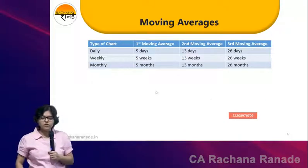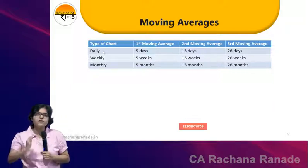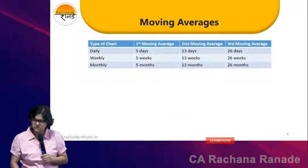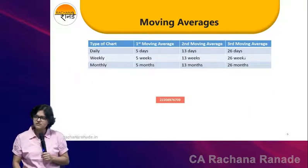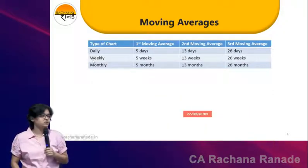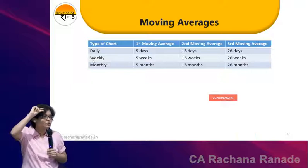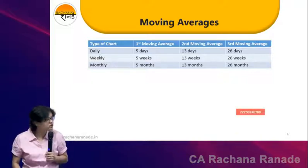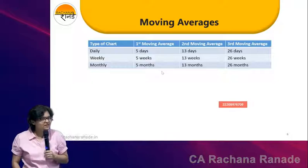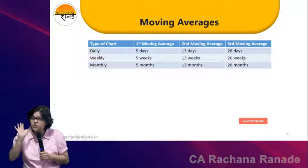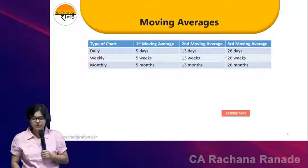If I am talking about a daily chart and if I am talking about 5, 13, 26 — daily will be like 5 days, 13 days and 26 days. If I am talking about a weekly average, so the weekly type of candle is chosen, time frame is weekly, then it will be an average of 5 weeks, 13 weeks average and 26 weeks average. So that's like almost half a year.